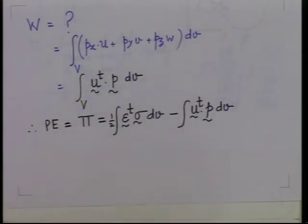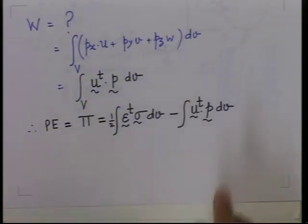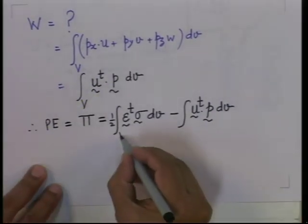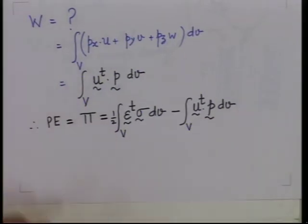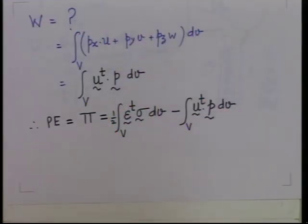A student asks: if external concentrated forces are applicable, what changes? If a load is directly applied at any point, that load multiplied by the corresponding displacement gives the work done. So Pi times the displacement of that node gives the work done for concentrated loads.